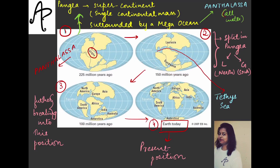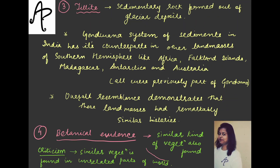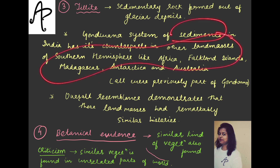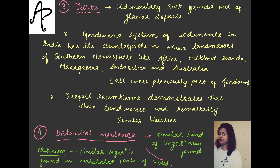What was found in India and the surrounding landmasses in the southern hemisphere — like Africa, Falkland Islands, Madagascar, Antarctica, and Australia — please find all of these places in your atlas. This shows that if those sediments were present in all of these landmasses, it means they were previously part of one region — Gondwana — and therefore the resemblance of these sediments demonstrates that these landmasses had remarkably similar histories.